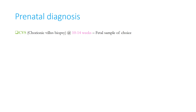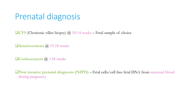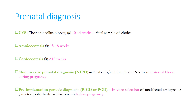For prenatal diagnosis, chorionic villus biopsy is performed at 10–14 weeks of gestational age and is the fetal sample of choice; the risk of pregnancy or limb loss is only 1–2%. Amniocentesis at 15–18 weeks uses fetal amniocytes as the DNA source. Cordocentesis is done at more than 18 weeks using fetal blood. Non-invasive prenatal diagnosis (NIPD) uses fetal cells or cell-free fetal DNA from maternal blood, and pre-implantation genetic diagnosis involves in vitro selection of unaffected embryos or gametes before pregnancy.